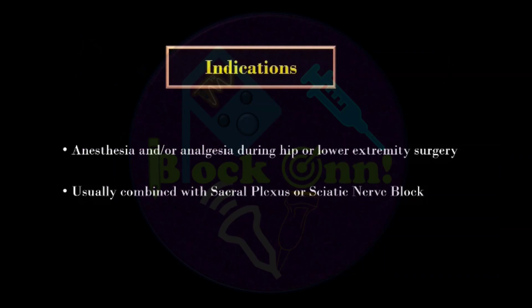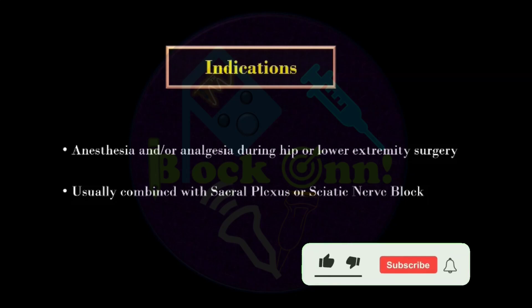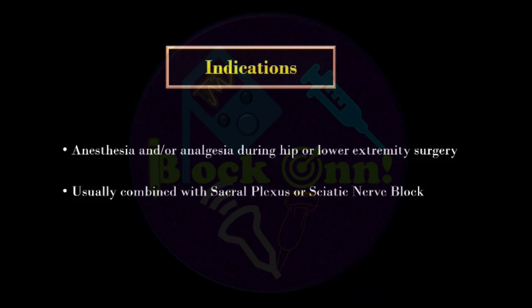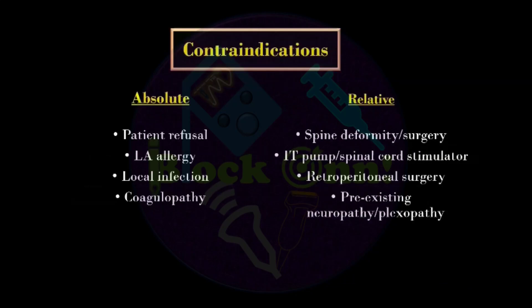Lumbar plexus block is mainly indicated for anesthesia of hip surgeries and lower limb surgeries, and we usually combine it with the sacral plexus or sciatic nerve block. When choosing lumbar plexus block over spinal or epidural anesthesia, keep in mind that the other limb is not anesthetized. You will need to give sedation or keep the limb in the supine position rather than lithotomy if possible, and discuss with the surgeon whether they can modify their procedure accordingly. Contraindications include absolute ones such as patient refusal and local anesthetic allergy, similar to other regional anesthesia procedures.